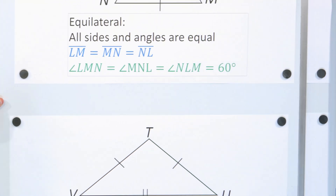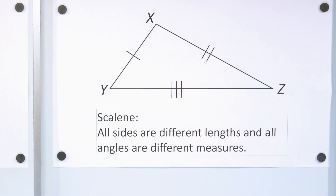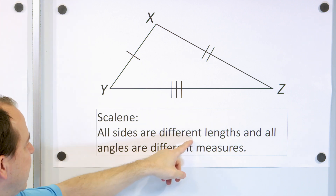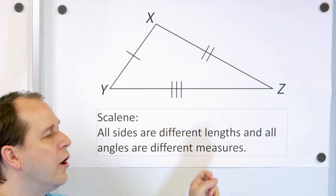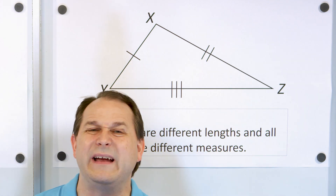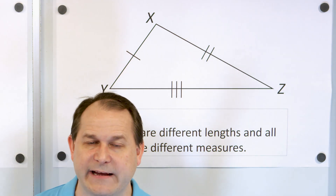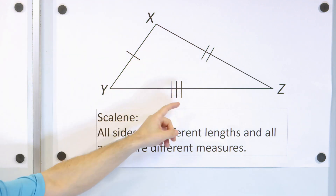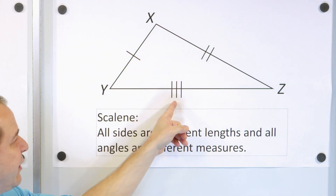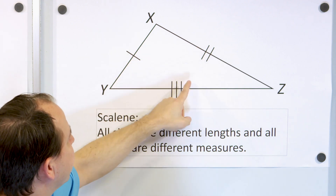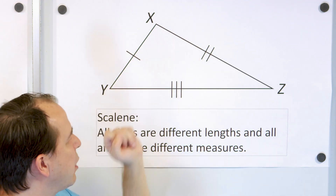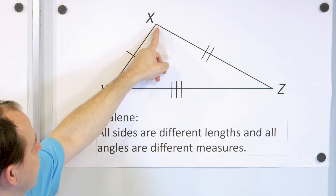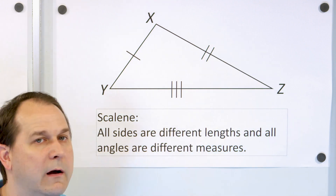Let's talk about the third kind of triangle, called a scalene triangle. It means all sides are different lengths and all angles are also different measures. We have one mark here, two marks here, and three marks there — that means each side is a different length than the others. And because of that, each angle looks different from the others as well.